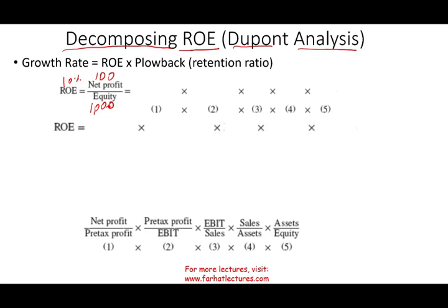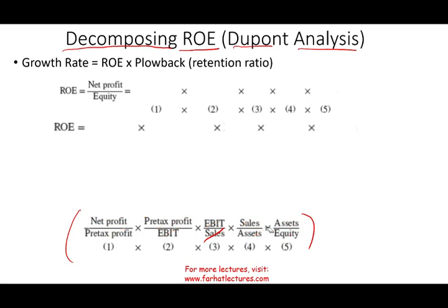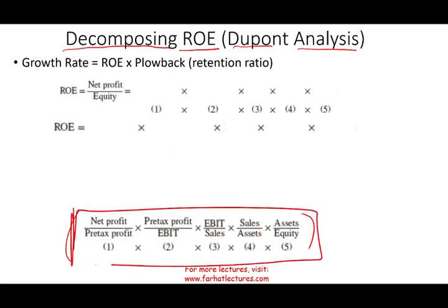If you want to understand the company further, we want to break this ratio down into five different elements. We can understand each component separately. The five elements are: net profit divided by pre-tax profit, pre-tax profit divided by EBIT, EBIT divided by sales, sales divided by assets, and assets divided by equity. Notice that everything cancels out, and what we are left with is net profit divided by equity. This five-piece formula equals the basic ROE formula, but when we break it down, we learn more about the company.